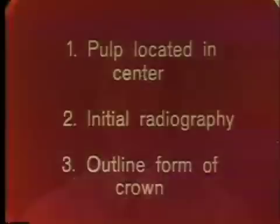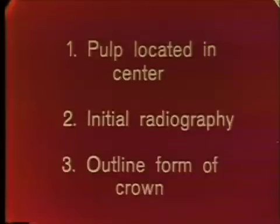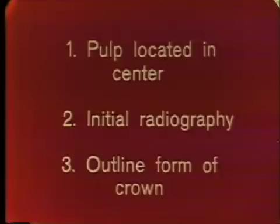Since the pulp lives inside the tooth where you can't see it, you have to use guides in order to visualize the size, shape, and position of the pulp. We generally rely on three guides: the knowledge that the pulp is always located in the center of the tooth, the initial radiograph, and the outline form of the crown we're working on.